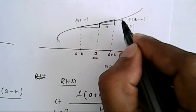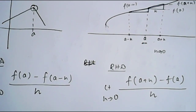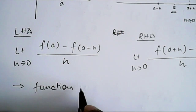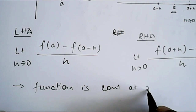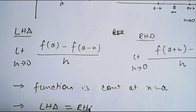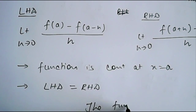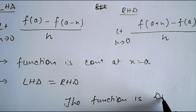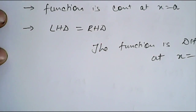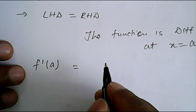So we have calculated the slope just after and just before the point a. Now we say: if the function is continuous at x equal to a, and the second condition is if the left hand derivative is equal to the right hand derivative, then we say that the function is differentiable at x equal to a. The differentiation is denoted as f dash of a, which equals either the LHD or RHD.